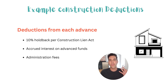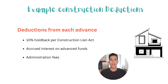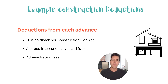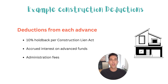The third major deduction would be fees. Each time you draw money, it involves getting a lawyer involved, your lender gets involved with admin fees, and there's also the inspection fee. So you can expect deductions for all of these factors.